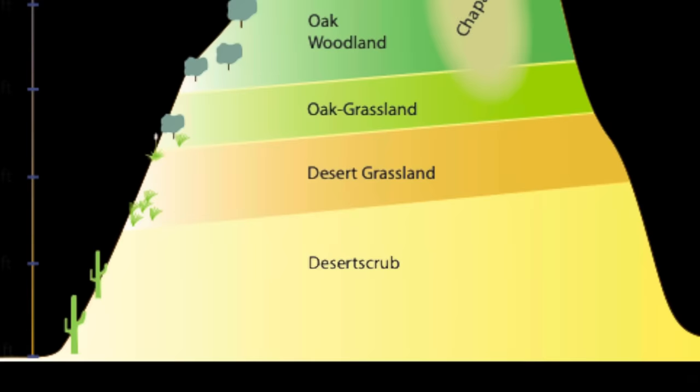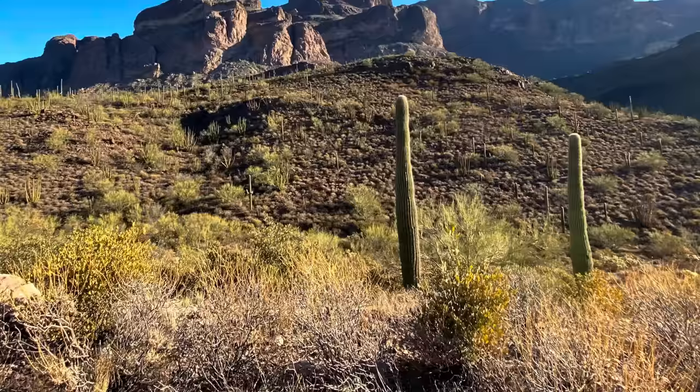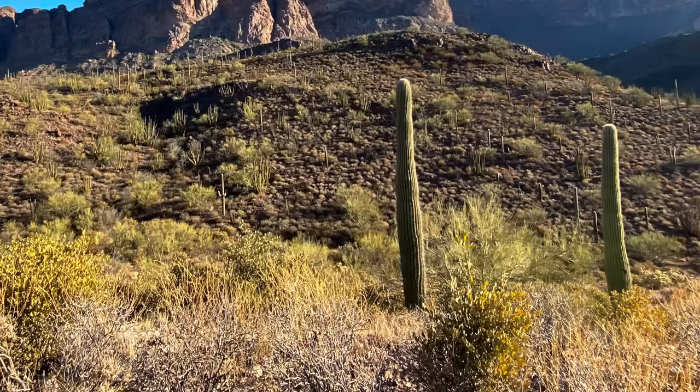First up we have the desert scrublands. This is where you're going to find your saguaro cactus as well as many other species of cacti, creosote bushes, and a lot of other scrubs. These regions are generally going to be found at low elevation — one to two thousand feet above sea level.